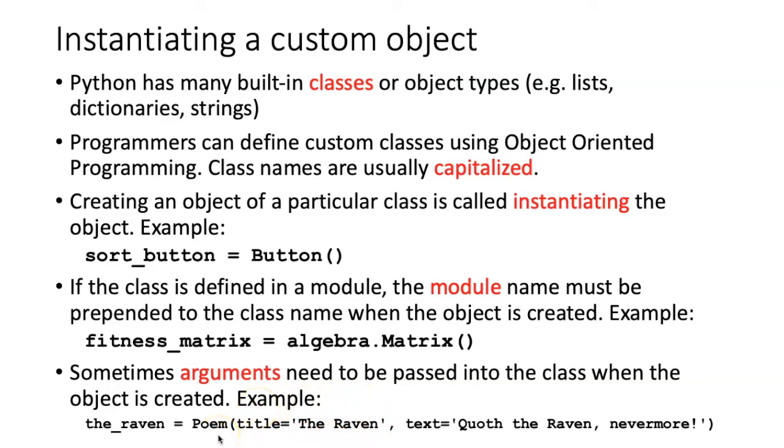In the example of a class called poem, we might be required to pass in the title of the poem and the text of the poem before we can create a particular instance of a poem.